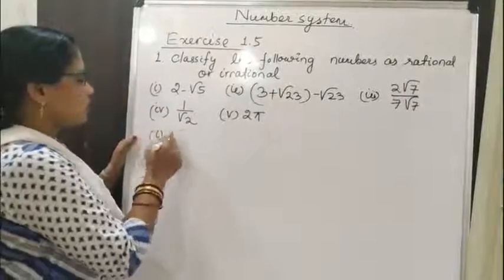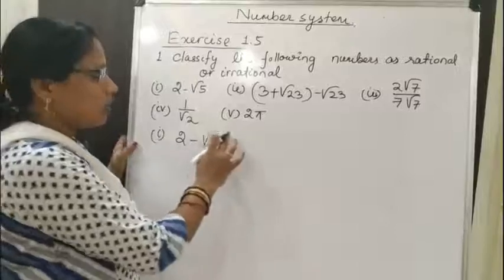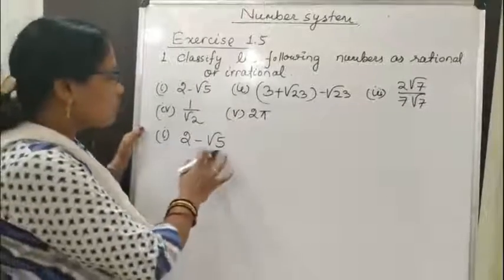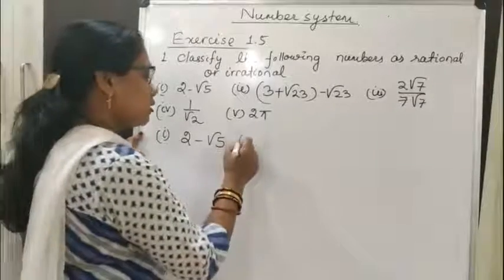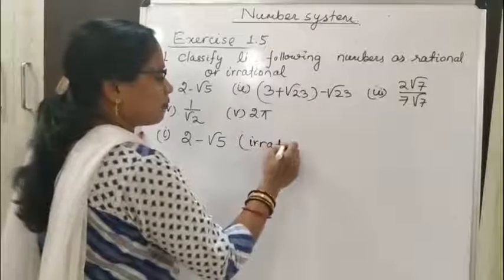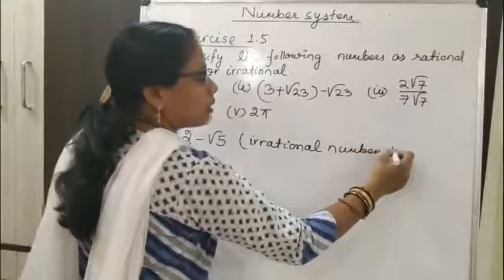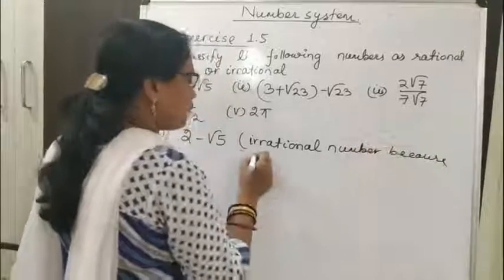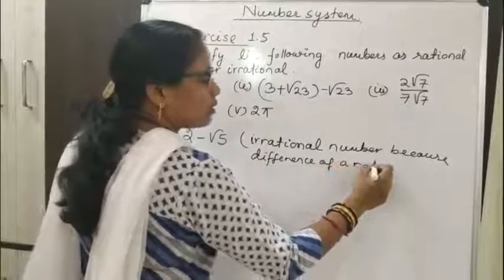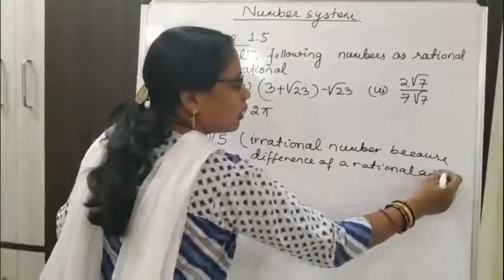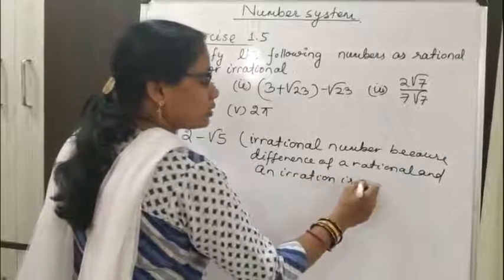Bit 1 is 2 minus √5. We know 2 is a rational number and √5 is an irrational number. The difference of a rational number and an irrational number is always irrational. So this is an irrational number, because the difference of a rational and an irrational is always irrational.